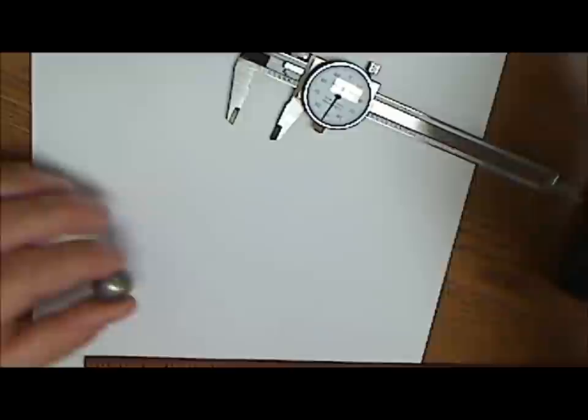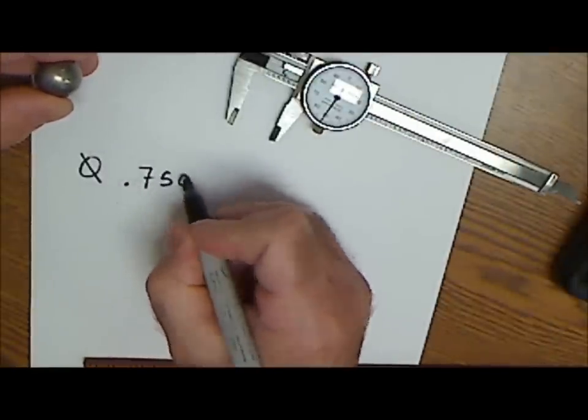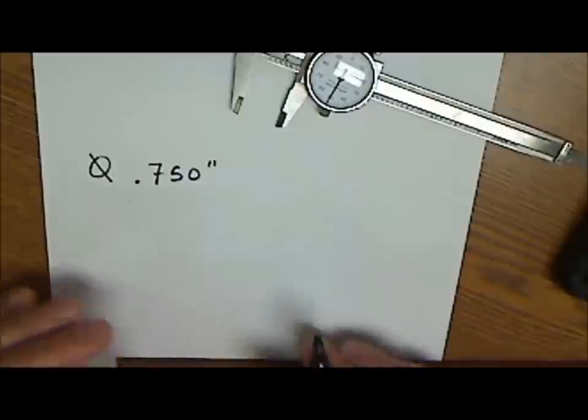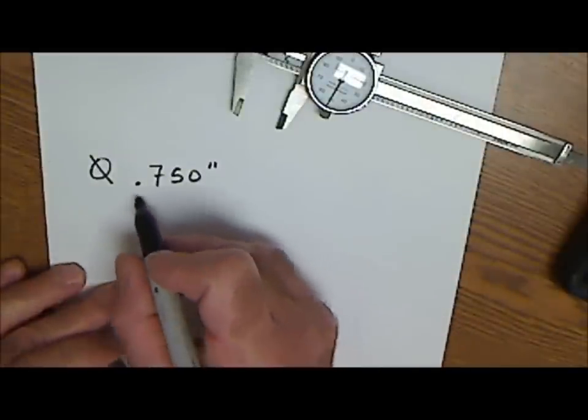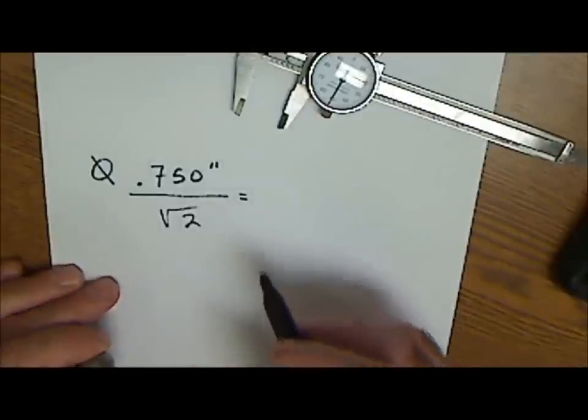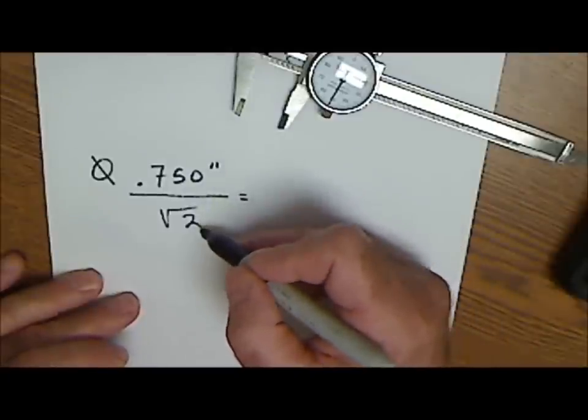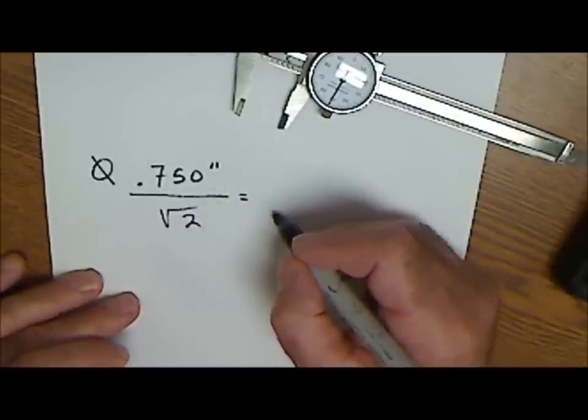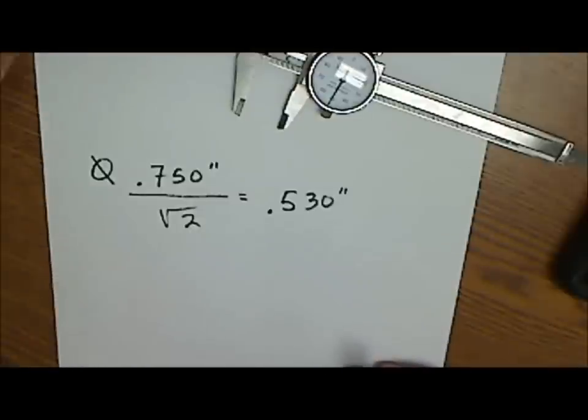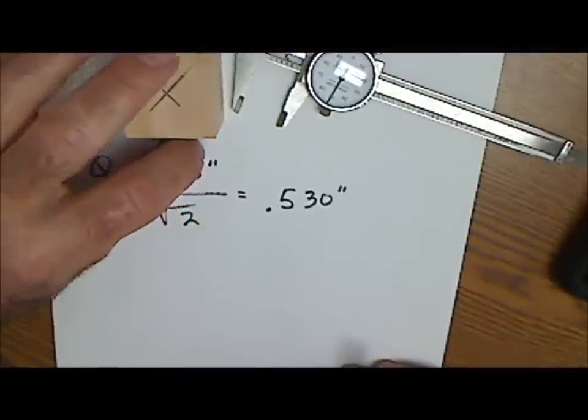This ball bearing is exactly 0.750, but I'm checking with my dial caliper to a thousandth of an inch. I include that zero to say it's accurate to 750 thousandths of an inch. If I take that number, the diameter of my ball bearing, and divide it by the square root of 2, that's the size hole I could drill. So I do 750 thousandths of an inch divided by square root of 2, and I get 530 thousandths of an inch.